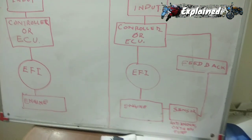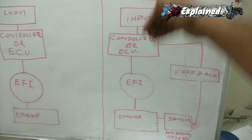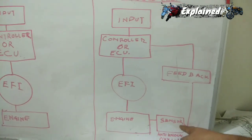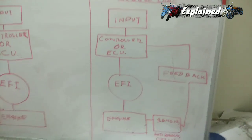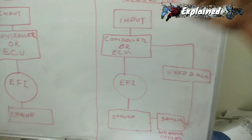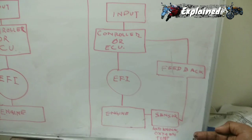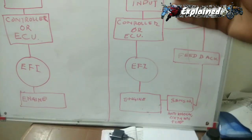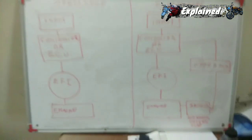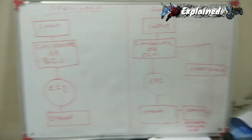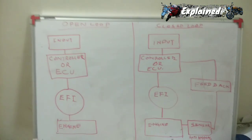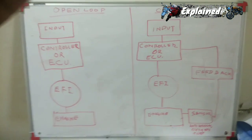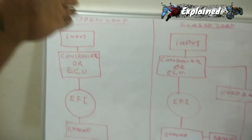In the closed-loop system, you have a feedback channel. The ECU controls the EFI, which supplies fuel to the engine. The engine is equipped with many sensors — anti-knock sensors, oxygen sensors, and temperature sensors — which feed data back to the ECU. Based on this feedback, such as low oxygen levels, temperature variations, or engine knocking, the ECU accordingly controls the EFI unit and adjusts the quantity of fuel supplied.